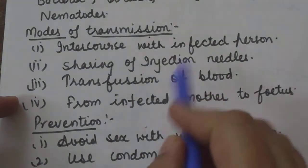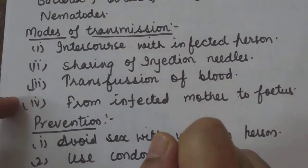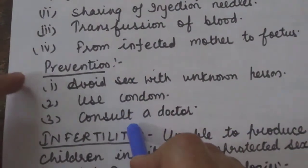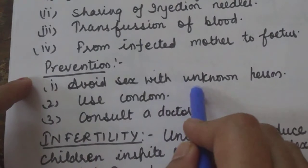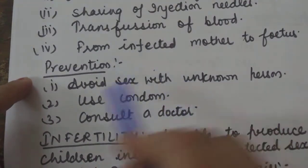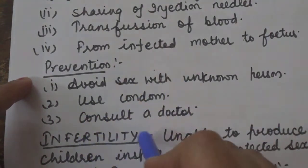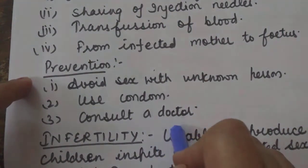The Government of India has recently initiated special reproductive health care programs to prevent early occurrence, early detection, and cure of STDs. The preventive measures are: one must avoid sex with unknown or multiple persons, always use a condom during intercourse, and in case of doubt, consult a qualified doctor without delay.